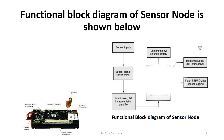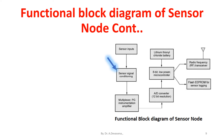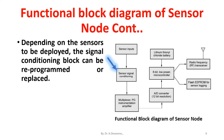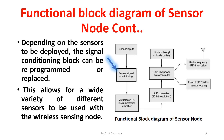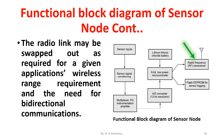The functional block diagram of a sensor node is shown below. A modular design approach provides a flexible and versatile platform to address the needs of a wide variety of applications. Depending on the sensors to be deployed, the signal conditioning block can be reprogrammed or replaced, allowing a wide variety of different sensors to be used with the wireless sensing node. The radio link may be swapped out as required for a given application's wireless range requirement and the need for bi-directional communications.